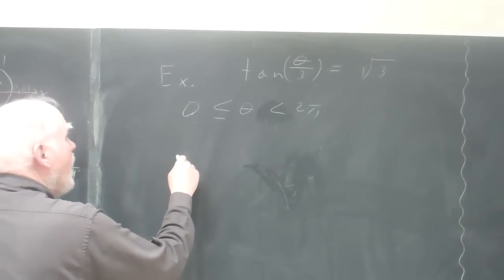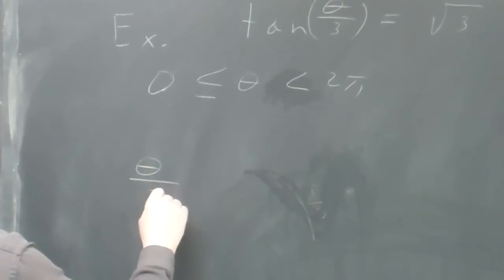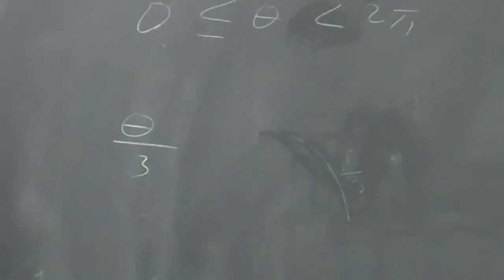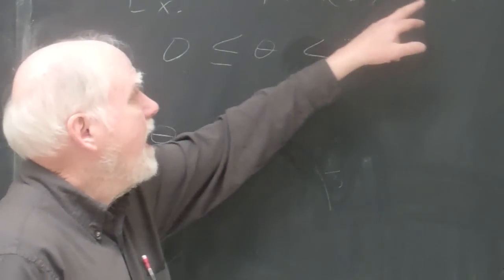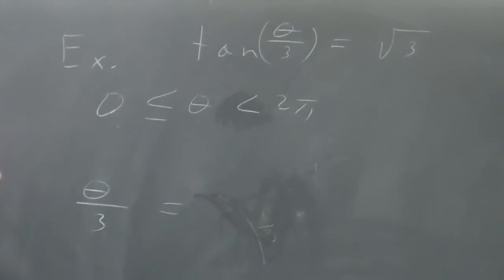So, what do I do? Well, I think theta over 3, now it's divided by 3, so it's going to be a little bit different. And I say, what angle, tangent of what angle would give me the square root of 3?